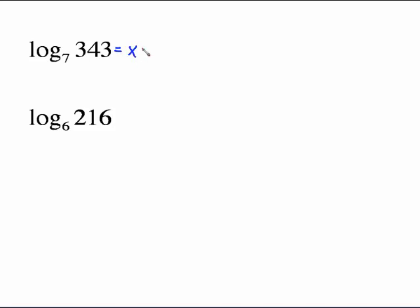This is saying: 7 to the what gives me 343? You may know what that is. If not, write down x, convert to exponential: 7 to the x equals 343. You can do successive divisions or try the calculator. If you do 7 to the third on the calculator, you get 343. That means log base 7 of 343 equals 3.